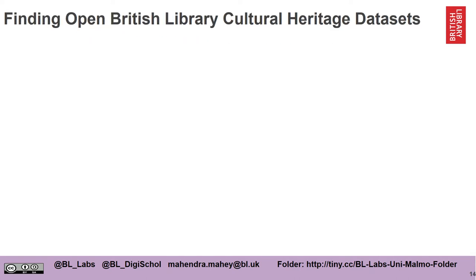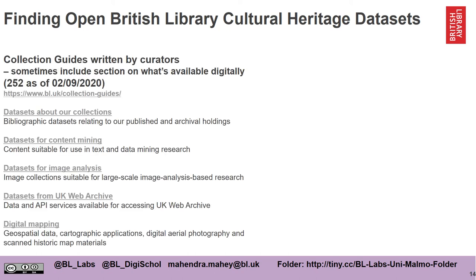So how do you find open British Library cultural heritage datasets? You can refer to our collection guides, which are written by our curators. Sometimes they include a section on what's available digitally. As of today we have 252 of them, and there's a link for you to explore further.